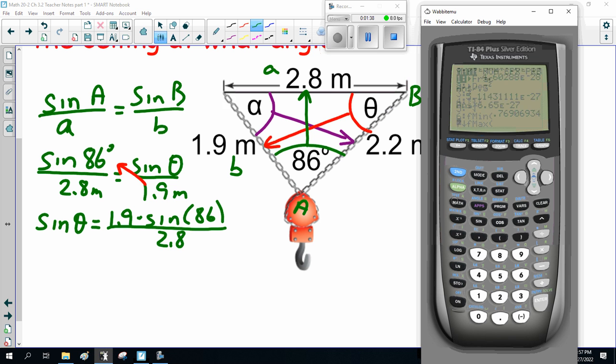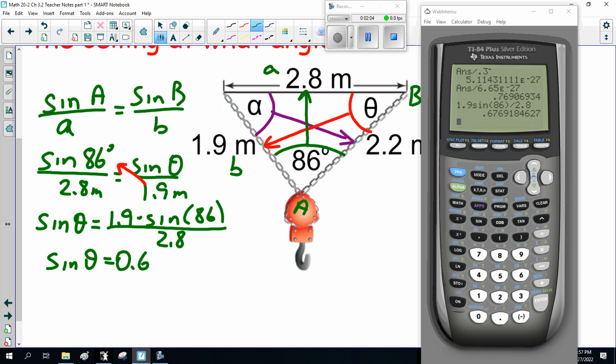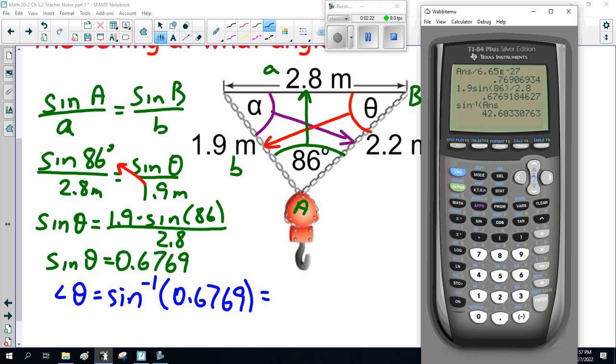So, double-checking, I'm sorry, I'm in radian mode again. 1.9 sine of 86, close bracket, divided by 2.8 is 0.6769. Now, notice we want the angle. So, angle theta is sine inverse of 0.6769, which is inverse sine inverse answer, 42.6 degrees. So that's 42.6 degrees.